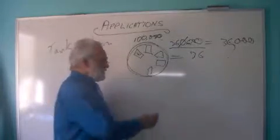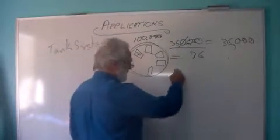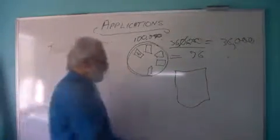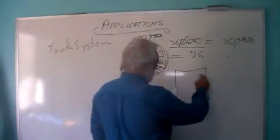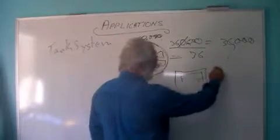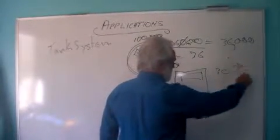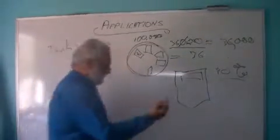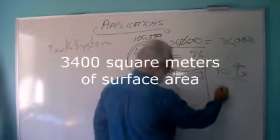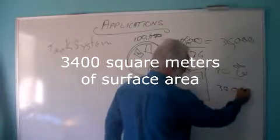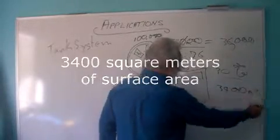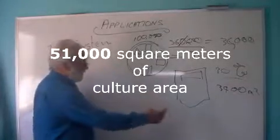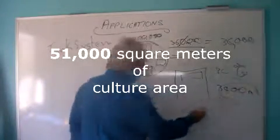So for argument's sake, I'm going to culture one hectare of oysters. My surface area is 30%, which is, let's call it 34,000 meters squared. You can see the potential here.